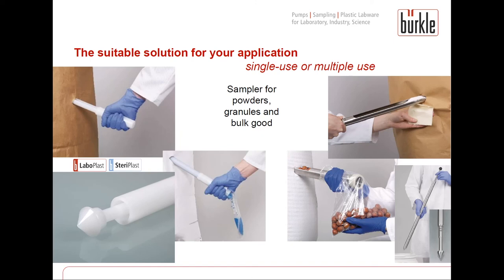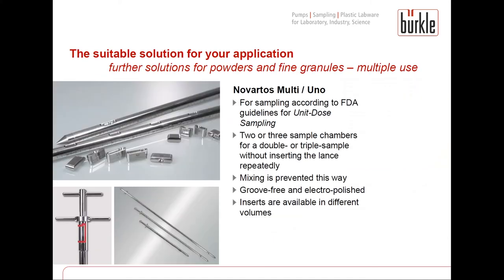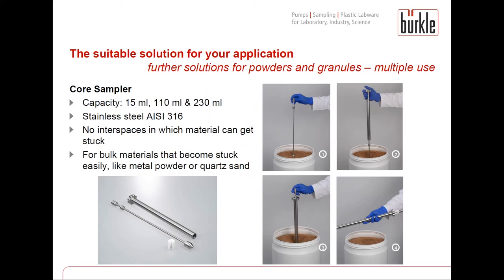For powders and bulk goods, Büeckle offers lances, a micro sampler for really small quantities, and the very popular zone samplers in different sizes made of stainless steel, aluminium, stainless steel with PTFE, or a single-use alternative made of HDPE. Further solutions for powders and fine granules include the Novatos Multi or UNO, designed specifically for pharmaceutical applications — with the Novatos it is possible to take a double or triple sample from the same spot without inserting the lance repeatedly, preventing mixing. A new core sampler is also available in three sizes made of stainless steel for tricky bulk goods that easily become stuck in interspaces.